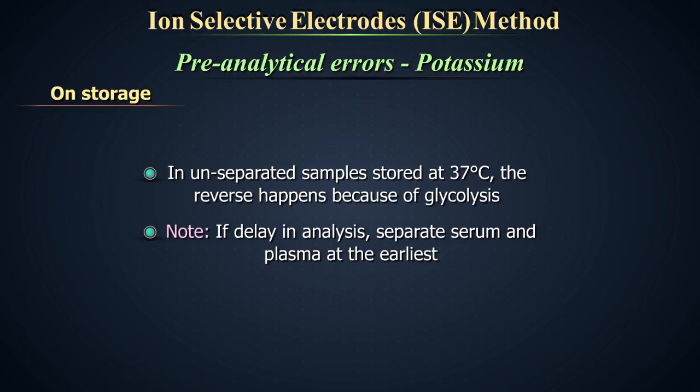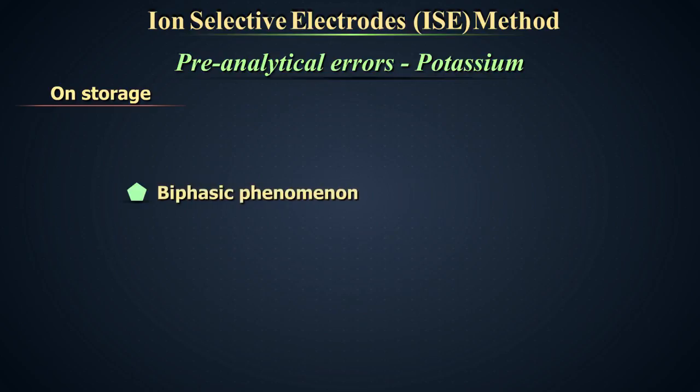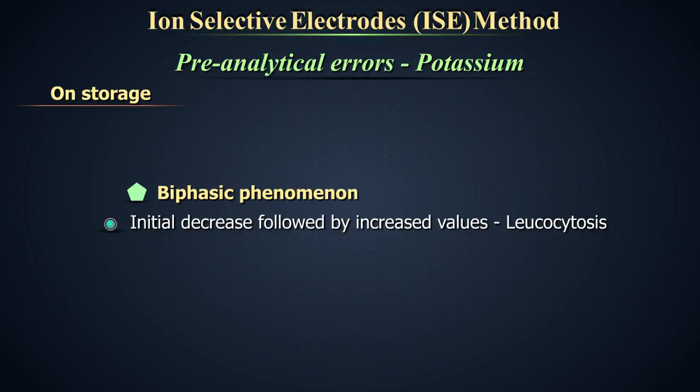In unseparated samples stored at 37 degrees Celsius, the reverse can happen because of glycolysis. A biphasic phenomena, an initial decrease followed by increased values can happen in the event of leukocytosis.